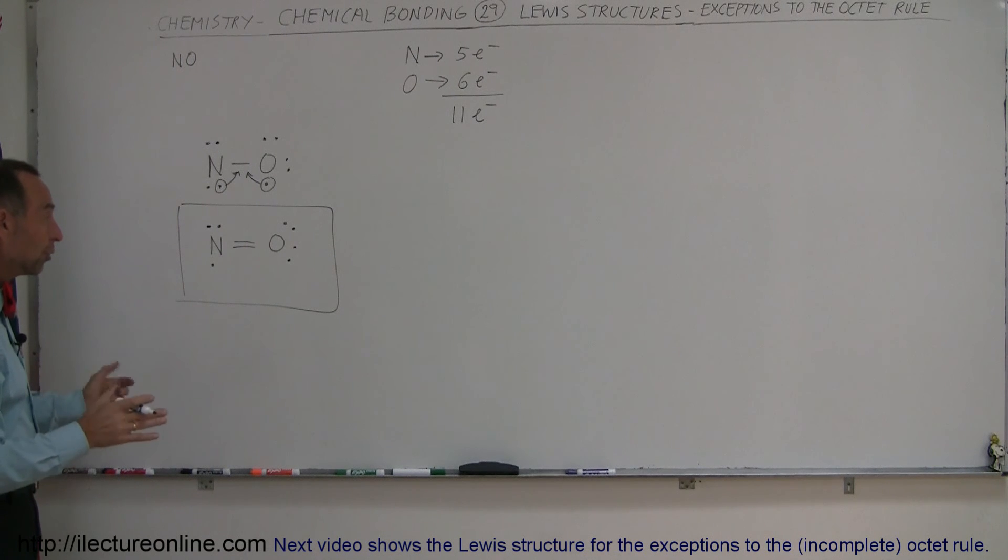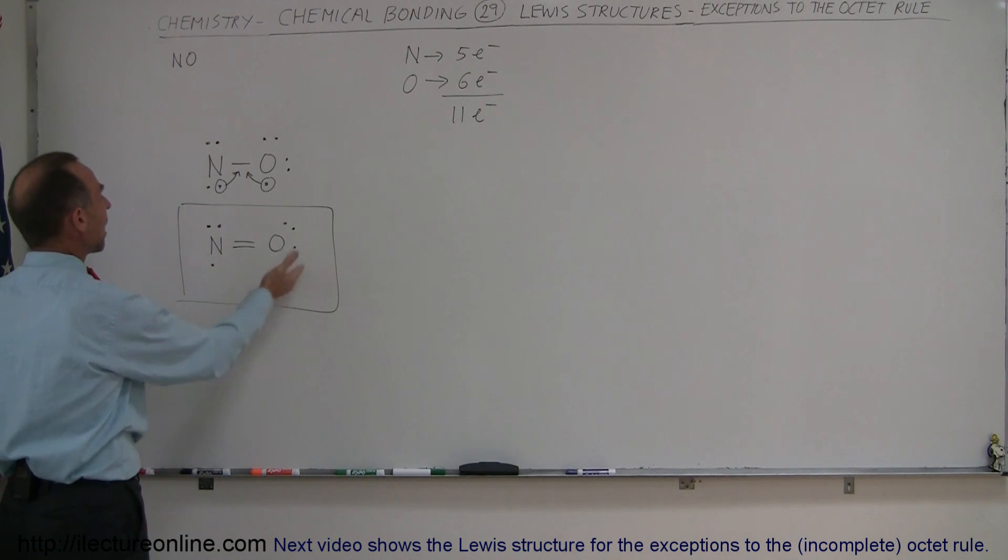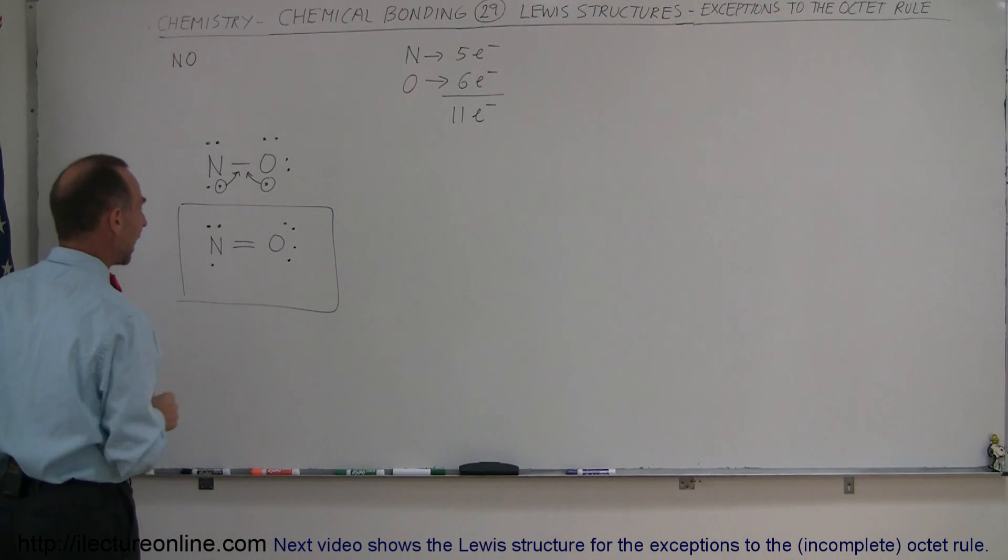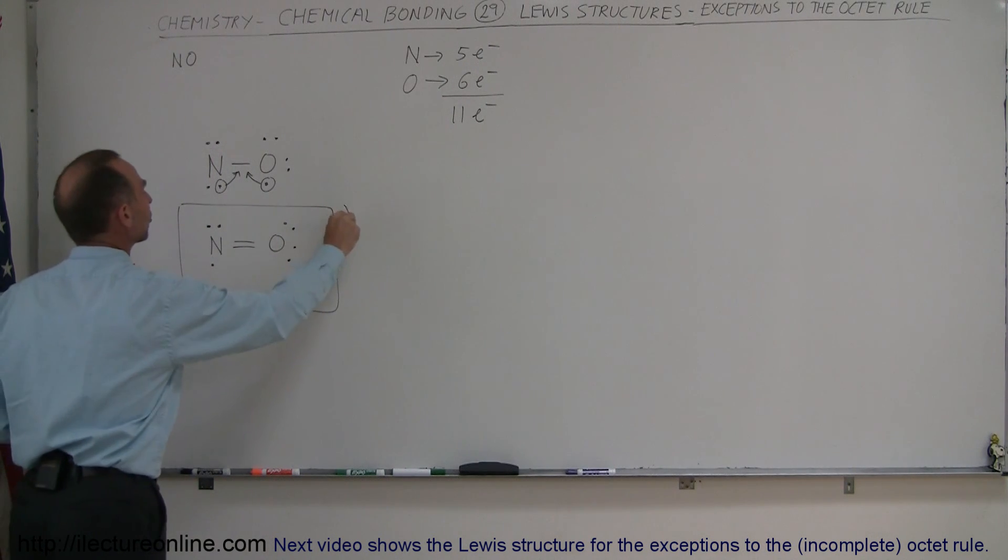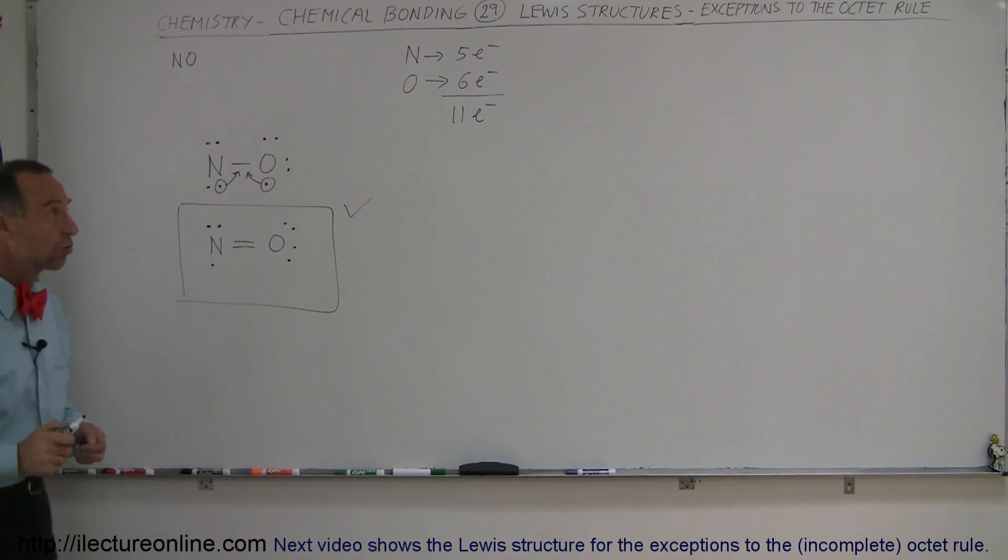But again notice that there's no way to make the octet rule be followed by both of the atoms and so this would be the most likely scenario and this is the proper way of drawing the Lewis structure. So octet rule is not followed but it's actually a fairly stable molecule.